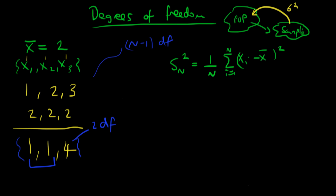In fact, because of degrees of freedom, our sample variance is not an unbiased estimator of the population variance, and I'm going to briefly sketch why. We can assume without loss of generality that our sample mean is equal to zero — or think about transforming our situation into a coordinate system where that is the case.